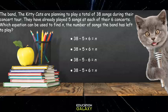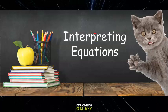If they've already played 5 songs at each of their 6 concerts, that's 5 times 6. And since we know there was a total of 38 songs, to find out how many are left, we would need to subtract 5 times 6 from the 38. Leaving us with 38 minus 5 times 6. And that is this answer choice. Perfect!